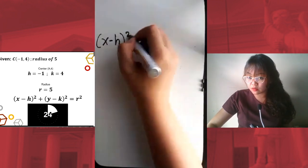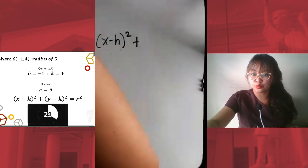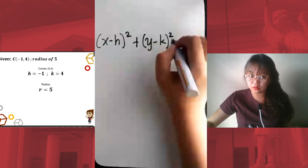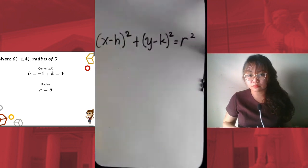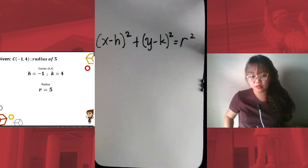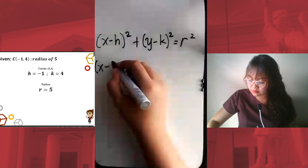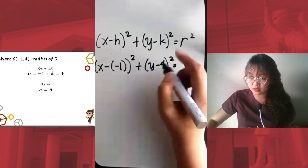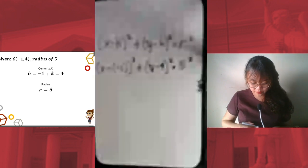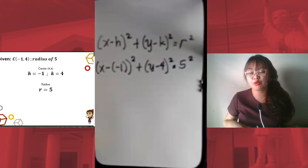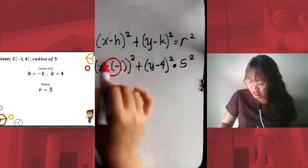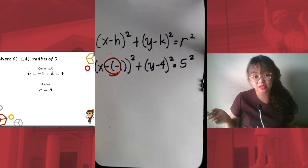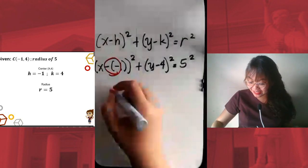Let's solve it together. We have x minus h quantity squared, plus y minus k quantity squared, equals r squared. Substituting: x minus negative 1, quantity squared; plus y minus 4, squared; equals 5 squared. This is where most students make mistakes — they forget to solve the double negative. Negative times negative gives us positive, so x minus negative 1 becomes x plus 1, quantity squared.